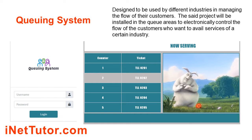Hello everyone, welcome to another free capstone project idea presented by our team, entitled Queuing System — a design to be used by different industries in managing the flow of their customers. The project will be installed in queue areas to electronically control the flow of customers who want to avail services of a certain industry.